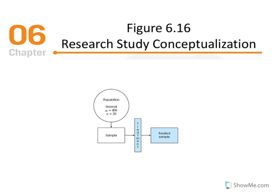The following example provides a brief preview of how probability is used in inferential statistics. Inferential statistics is the process of using sample statistics to draw conclusions about populations. The research situation is shown in figure 6.16: the researcher begins with a population that forms a normal distribution with mean equal to 400 and standard deviation equal to 20. A sample is selected using random sampling, meaning all individuals have an equal chance of being selected, with replacement.